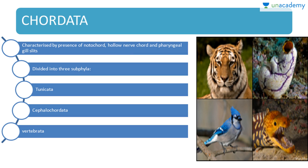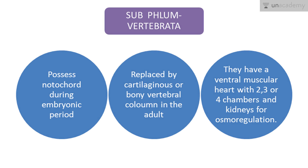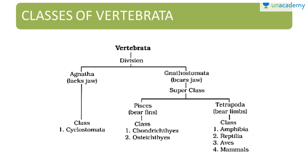Chordata are characterized by the presence of a notochord, hollow nerve cord, and pharyngeal gill slits. They are divided into three sub-phyla: Urochordata, Cephalochordata, and Vertebrata. In Vertebrata, the notochord present during embryonic period is replaced by a cartilaginous or bony vertebral column in the adult. They have a ventral muscular heart with two, three, or four chambers, and kidneys for osmoregulation and excretion.